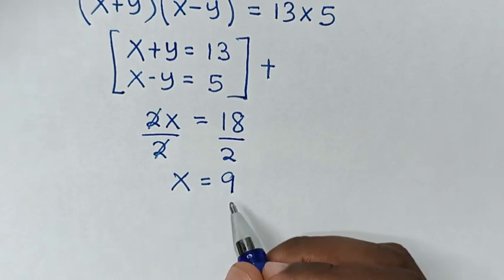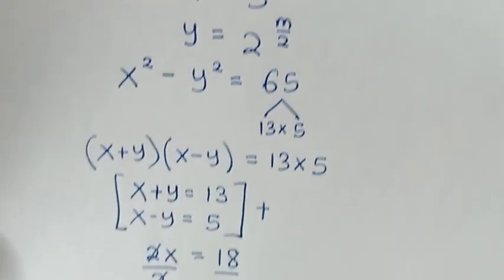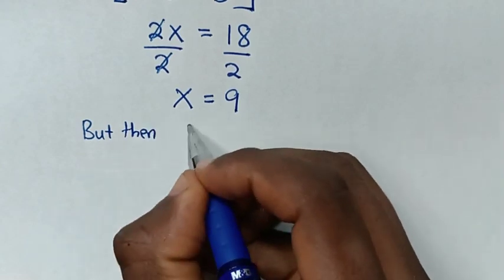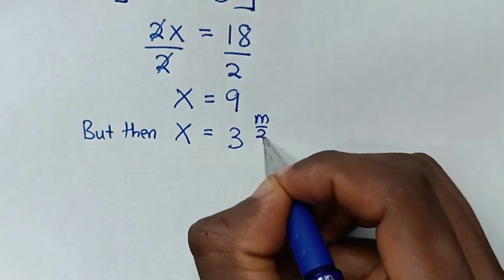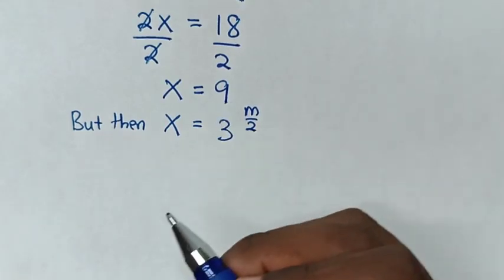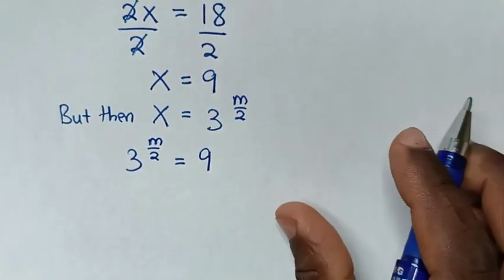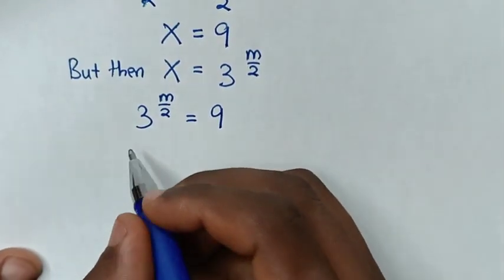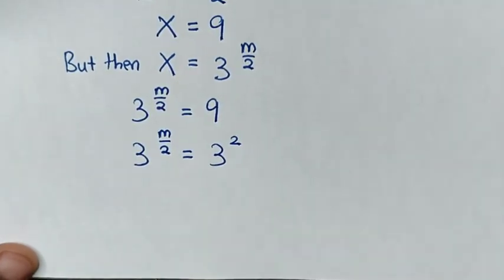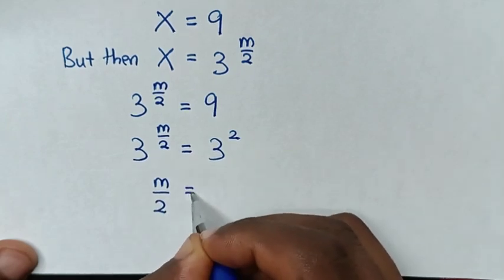So from here we already have the value of x to find the value of m. We recall that x is equal to 3 power of m over 2. To find the value of m, we compare: 3 power of m over 2 is equal to 9. Since 9 is 3 squared, we have the same base of 3, so we compare the powers: m over 2 is equal to 2.